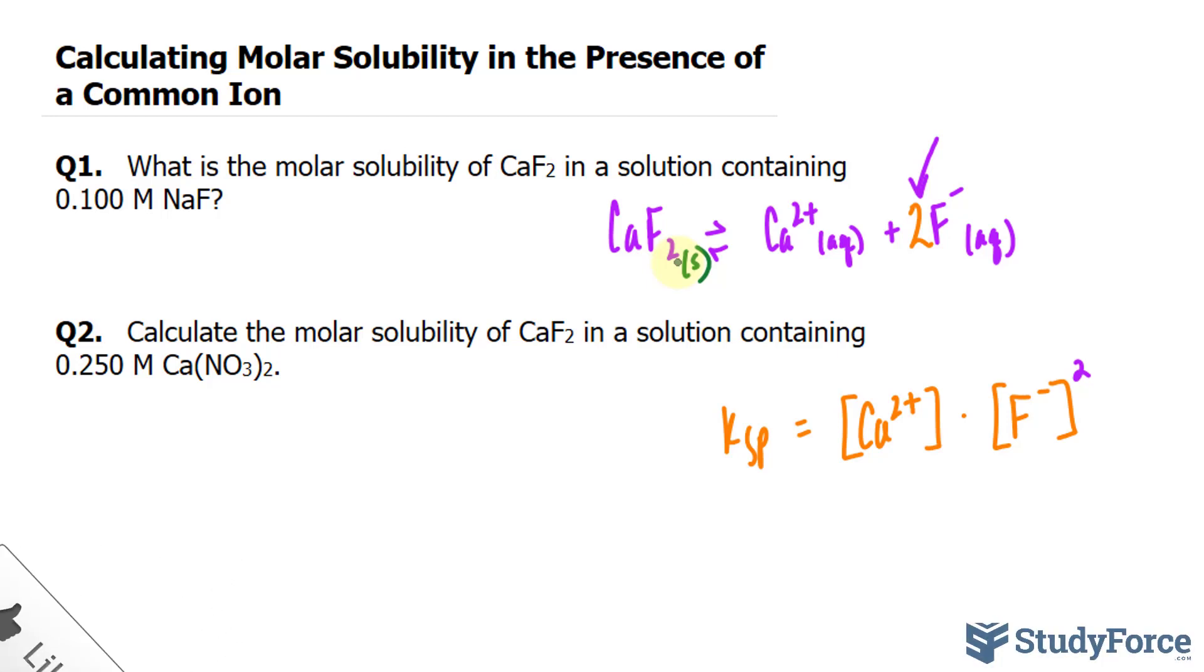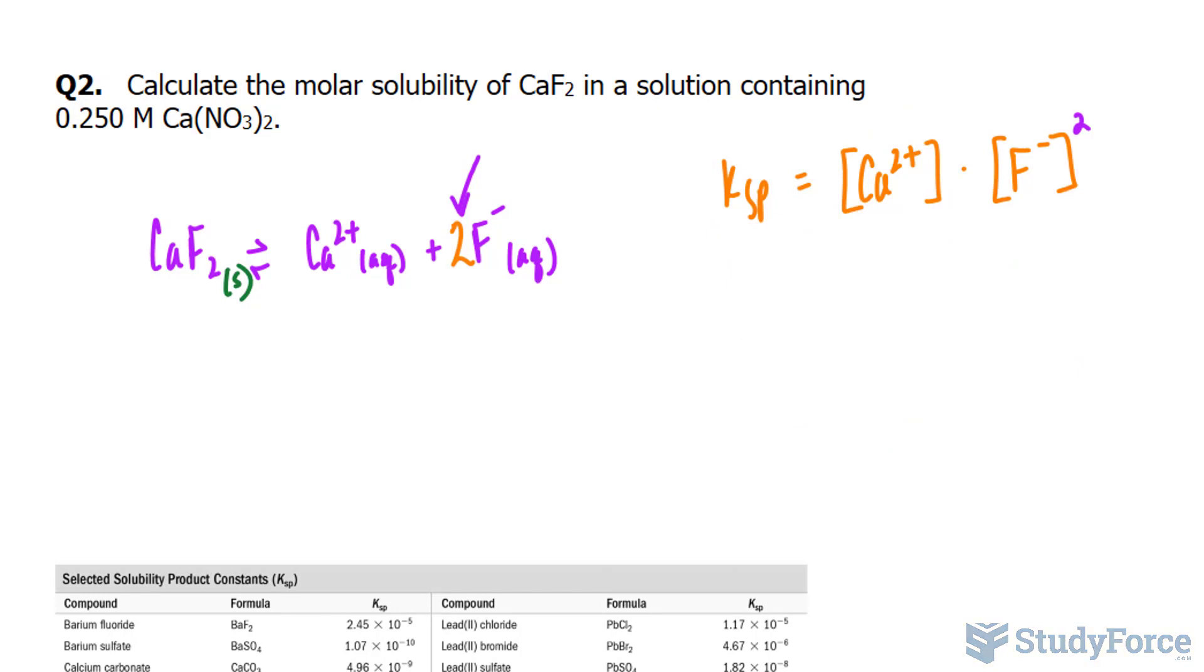Next we'll create an ICE table for this equation that we've created. I've conveniently moved everything underneath so that I can have more room. So I'll create an ICE table where we have the initial change and equilibrium concentrations, and what we're looking for is the expression for the equilibrium concentrations. Since this is a solid, we don't worry about this part. The initial concentration of calcium 2+ is 0.